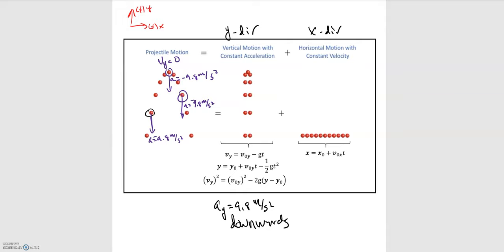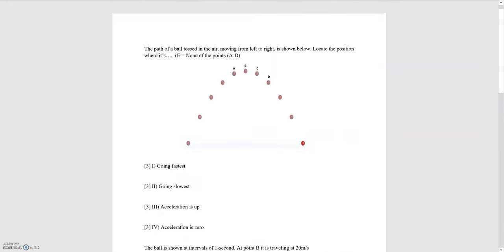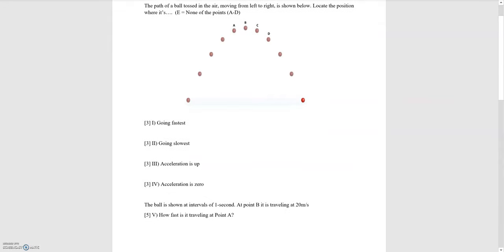The reason for this is that we don't have any acceleration in the x direction. As soon as the object is in the air, the only thing happening in the x direction is a constant velocity — there's no acceleration. The only acceleration is in the y direction, pointing downwards, with a magnitude of 9.8 meters per second squared. Knowing all this, let's hop back to the problem and start analyzing what the questions are asking us.